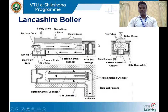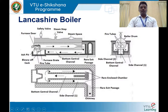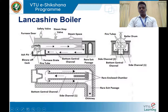The boiler shell is placed on the brick structure, which provides passages — a passage at the bottom of the boiler shell and passages at both sides of the boiler shell. It provides side passages as well as a passage at the bottom for hot gas circulation. You can see two side channels — side channel 1 and side channel 2 — and one bottom central channel. This view shows two flue tubes inside the boiler shell and the brick structure with side channels and bottom central channel.